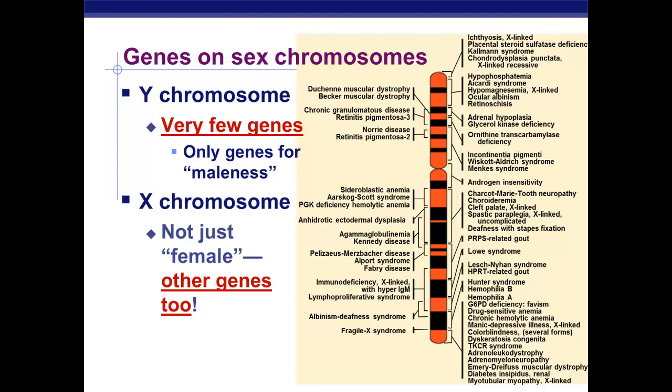Now, the X chromosome men and women have, so it doesn't just have female genes on it. It has all sorts of genes. And you can see in this picture here that mutations on this chromosome can cause all kinds of diseases. In fact, it's about 60 different diseases in humans.